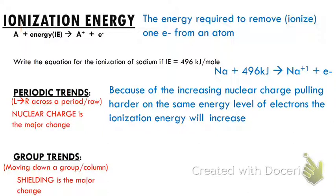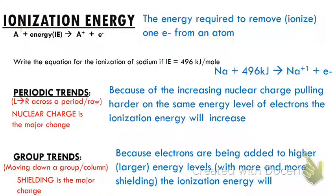In a group, moving down a column, shielding is what's changing. Our electrons are getting farther and farther from the nucleus, with more energy levels protecting them. With less effective nuclear charge — like that lithium example — those electrons on the outside aren't going to be held on quite as strongly. That means it's going to be easier to pull them off, and the ionization energy is going to decrease as we move down a column.